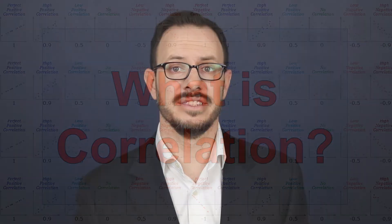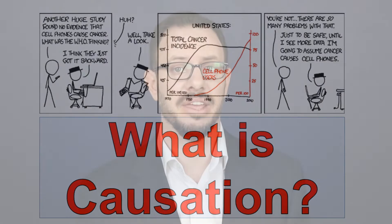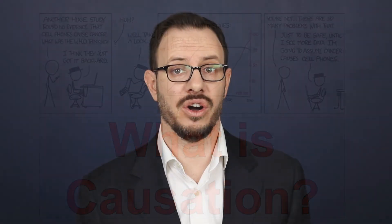Saying A and B are correlated simply means that knowing the value of A gives you information about the value of B. It doesn't mean that bigger A's cause bigger B's — it's just that bigger A's and bigger B's tend to happen together. Causation, on the other hand, means that A causes B. They don't simply happen together; a bigger A makes a bigger B happen.